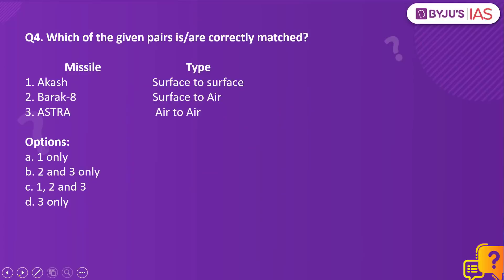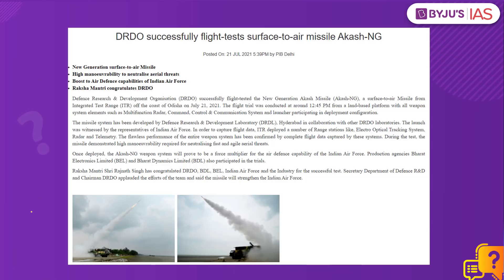Question number four. Which of the given pairs is or are correctly matched? Missiles and their types: Akash — surface to surface. Barak 8 — surface to air. Astra — air to air. The context is that DRDO has successfully tested the new generation Akash Missile. It is a surface-to-air missile and can neutralize aerial threats. It is yet to be deployed in the Indian Air Force, but once deployed it will boost the air defense capabilities of the Indian Air Force.